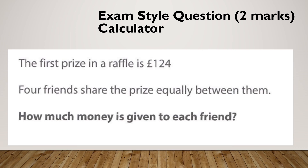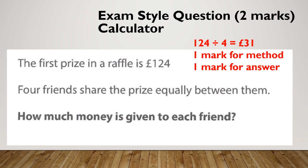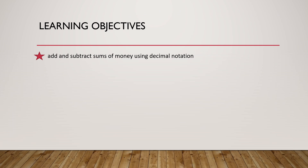Last one. The first prize in a raffle is £124. Four friends share the prize equally between them. How much money does each friend get? Did you get £31? Hopefully you saw that this was a share, so a divide. You might notice this is two marks and the others were three — I don't have a mark for notation here because on this particular question the answer line already had the pound sign on it.